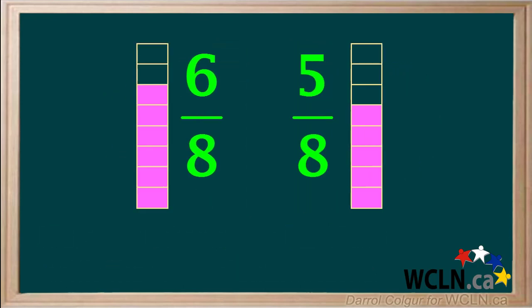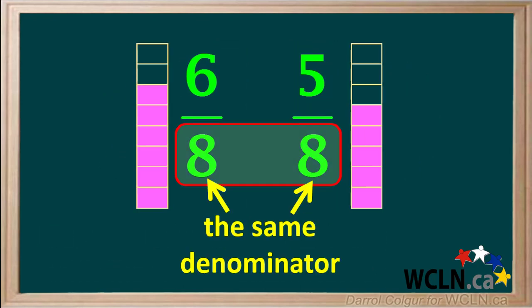Moving the fractions together, the fractions 6 eighths and 5 eighths have the same denominator. Fractions that have the same denominator are said to have a common denominator. These two fractions have the denominator 8 in common.